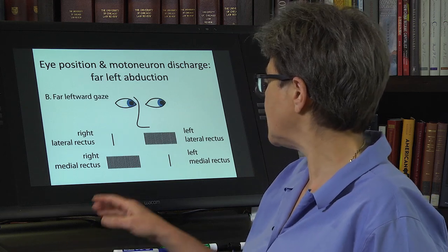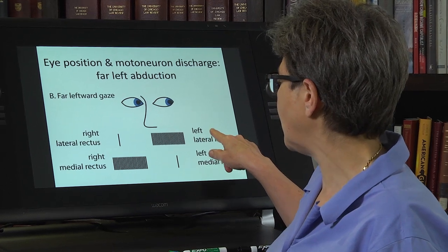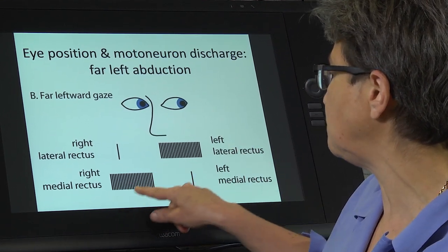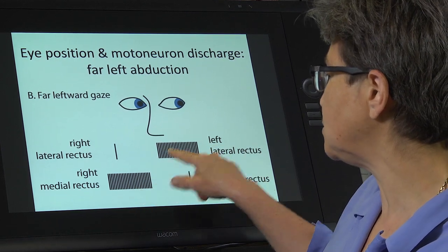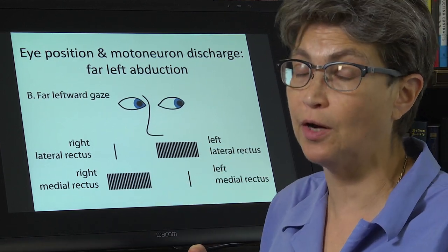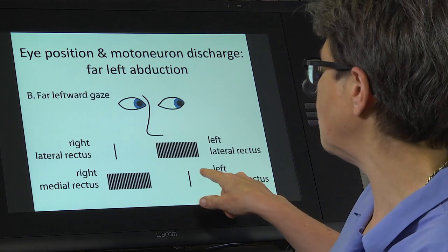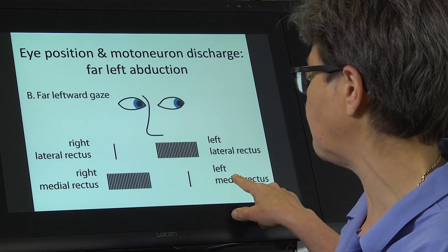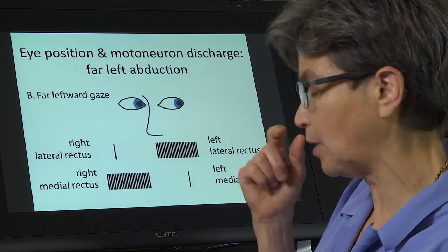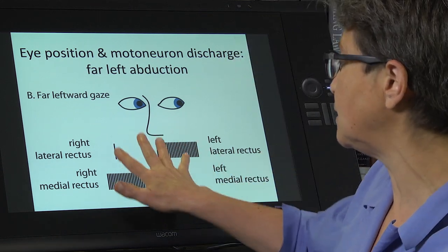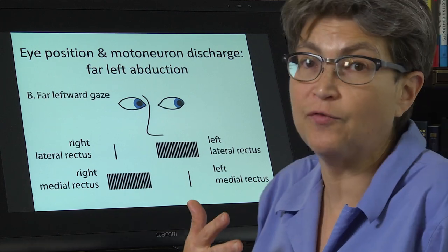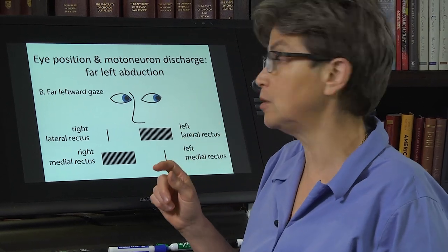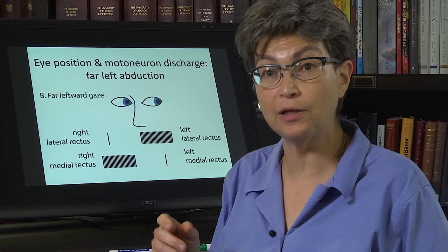Now let's say I look all the way to the left. In order to do that, I have to contract my left lateral rectus and my right medial rectus. To enable these two to pull the orbit effectively, I'm also best served if I inhibit — silence — my left medial rectus and my right lateral rectus. This is a schematic of the firing pattern that would accompany a far leftward gaze.